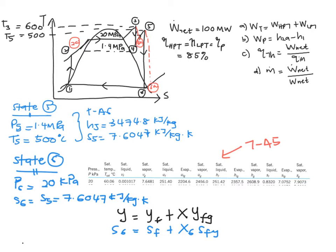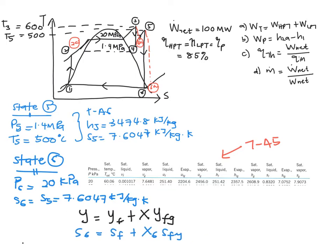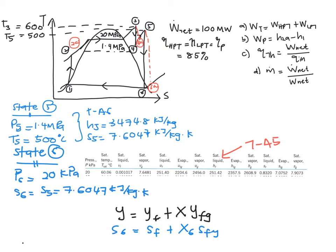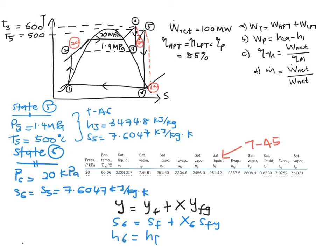Once you get X6, you can find H by using this general equation. Therefore, you will have H6 equal to HF plus X6 times HFG. Again, the value of your enthalpy here is obtained from this table, and your X is the one that you solve.